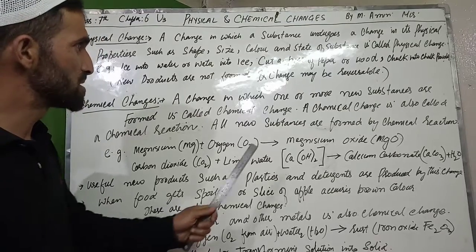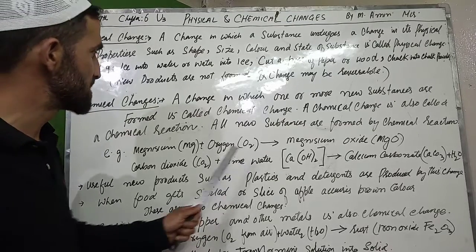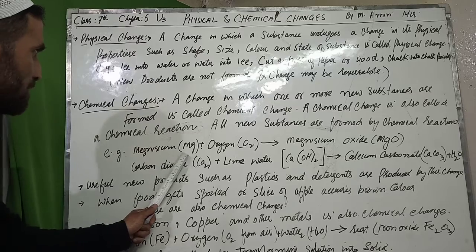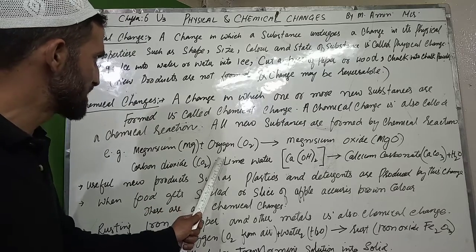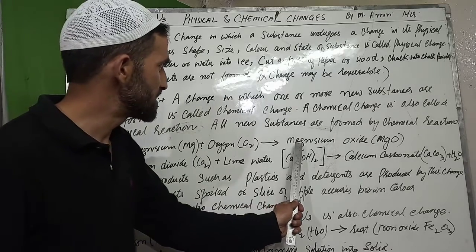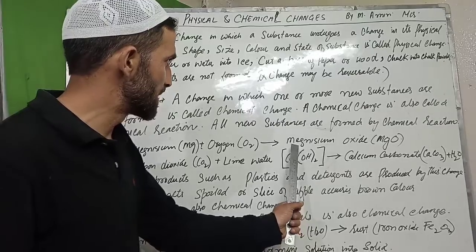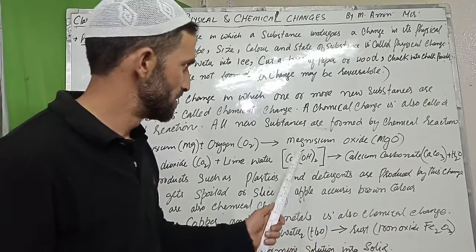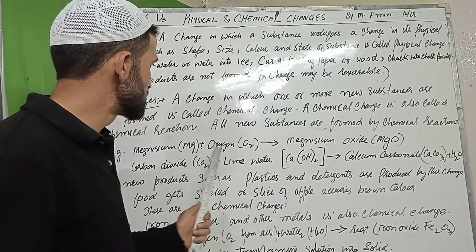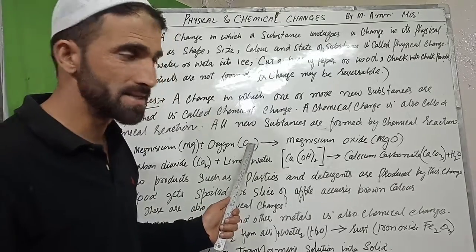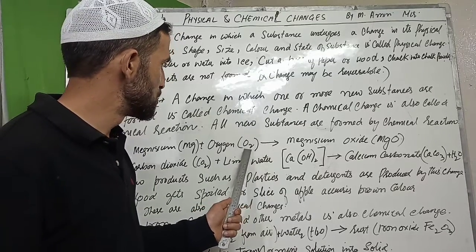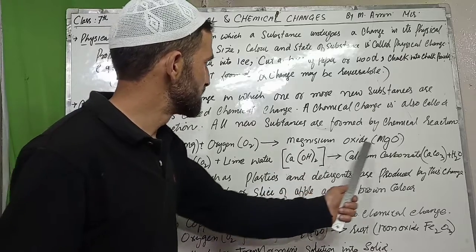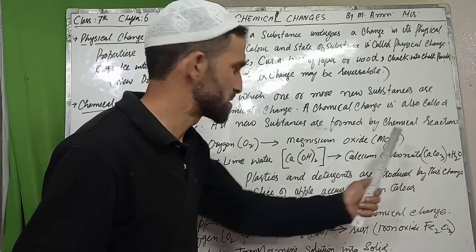Let's look at an example to understand the duration of a chemical reaction. Magnesium is made by oxygen and the main product is magnesium oxide (MgO). Magnesium ribbon burns in oxygen when lit, and with heat the product formed is magnesium oxide.